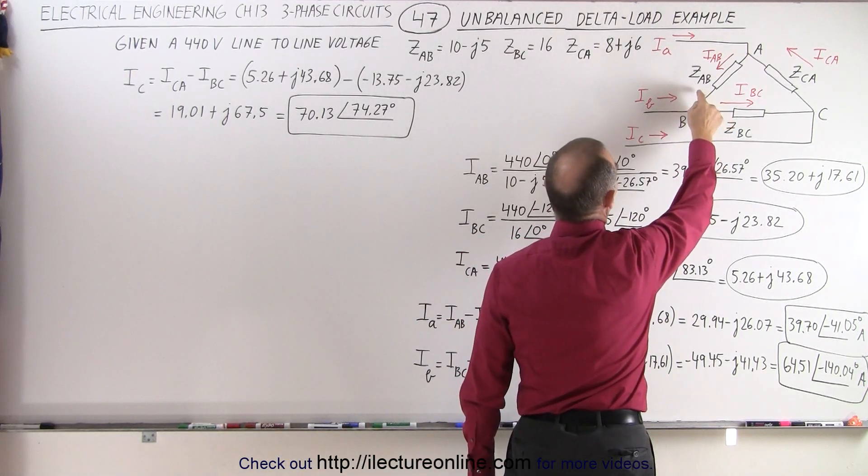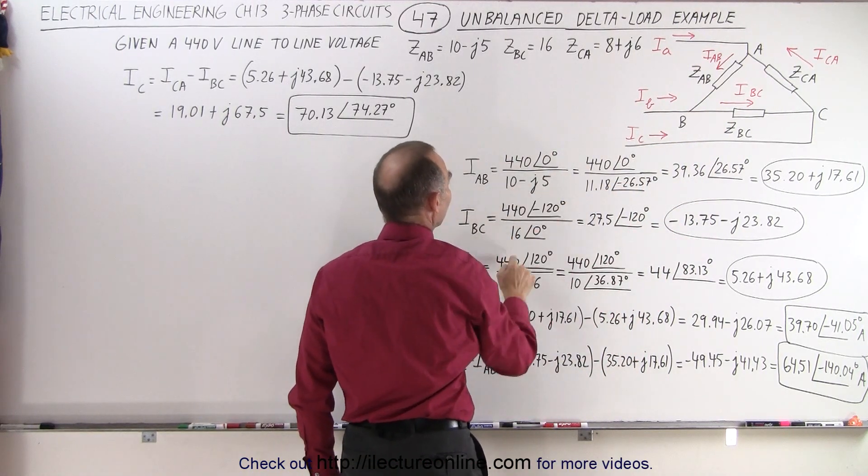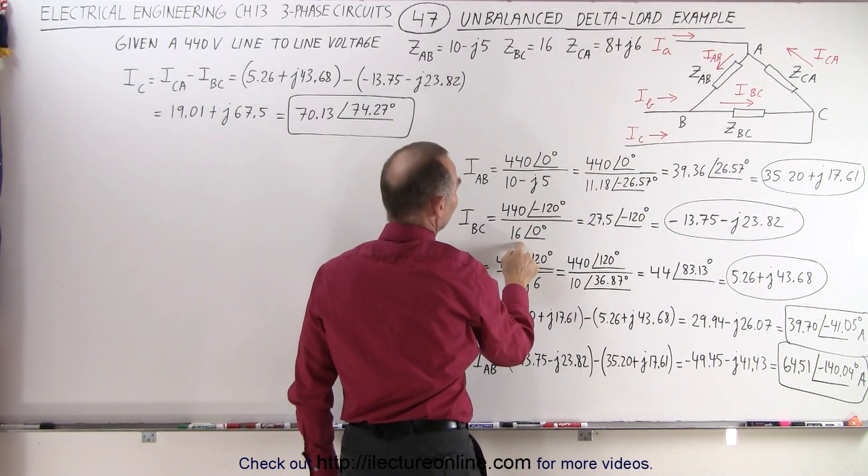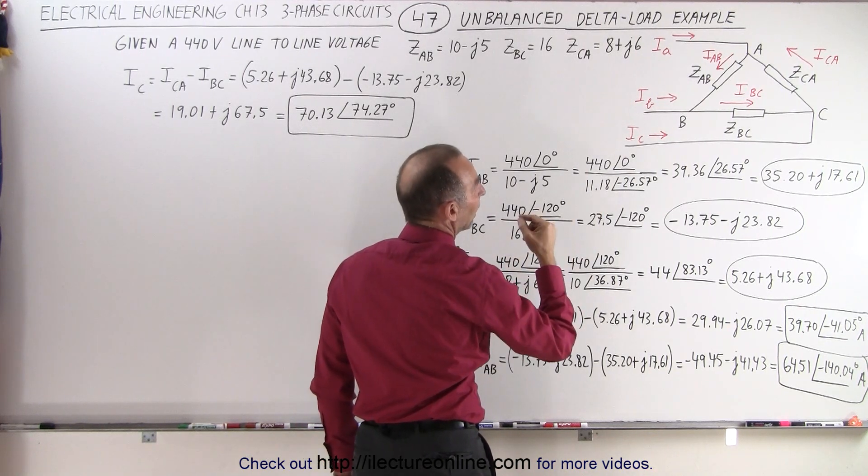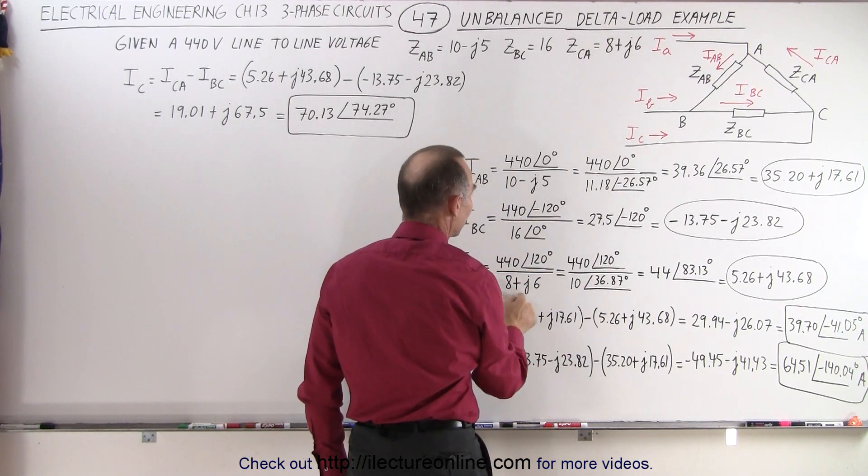And so we're taking each of the line voltages and dividing them by their corresponding impedances on those particular portions of the load. So for Zab, we have an impedance of 10 minus J5. For Zbc, we have 16 at a phase angle of 0. And for Zca, we have 8 plus J6.